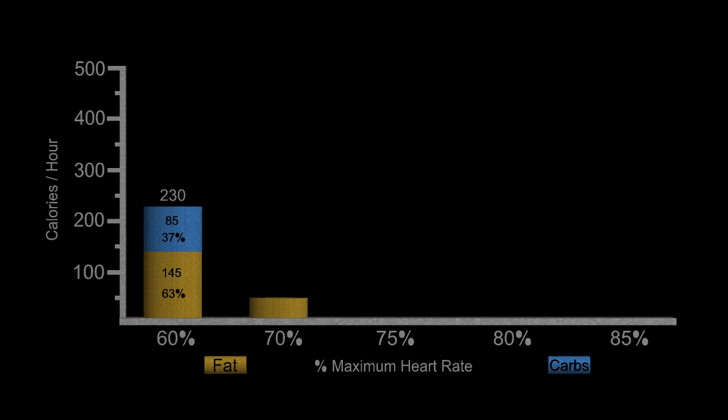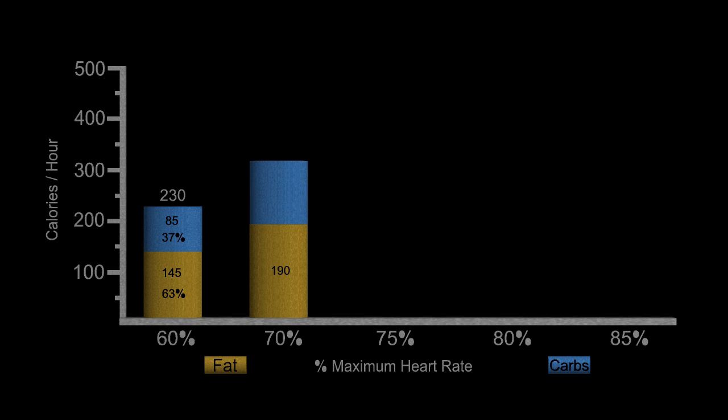Moving on to 70% of your maximum heart rate, you're going to burn about 190 kilocalories per hour from fat and 198 kilocalories per hour from carbohydrates for a total of 388 kilocalories. As you see, as we do more work, you're going to burn more calories. So the total number of calories does go up. The split is almost 50-50, 49% from fat, 51% from carbohydrates.